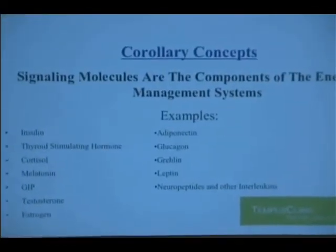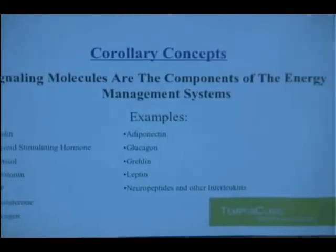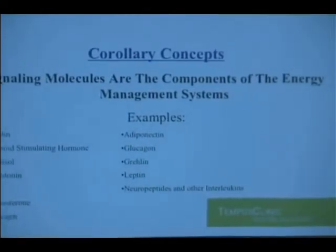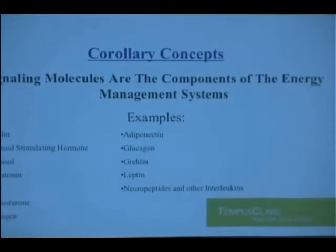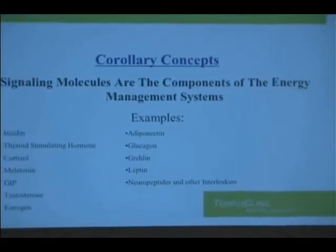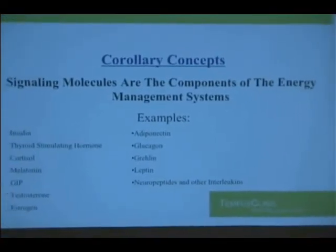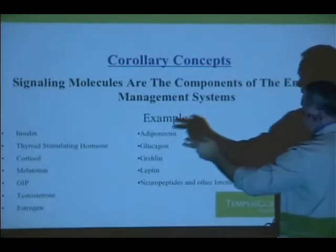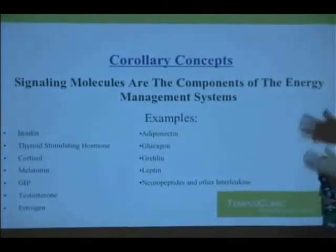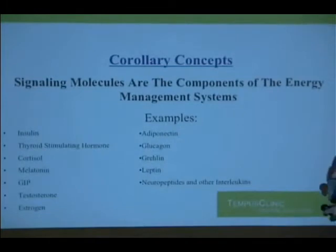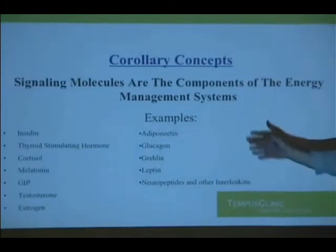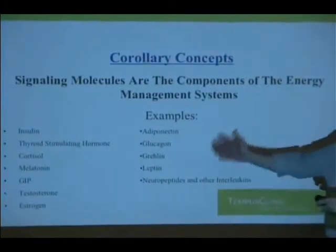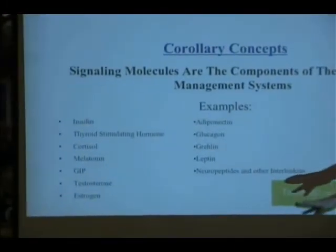What are signaling molecules? Most people have heard of endocrine molecules — testosterone, thyroid, insulin, thyroid stimulating hormone, cortisol, melatonin, gastric inhibitory peptide, estrogen, adiponectin, glucagon, ghrelin, leptin, neuropeptides, and interleukins. These are examples of endocrine hormones.